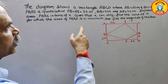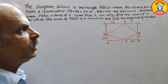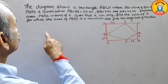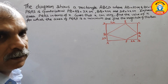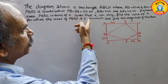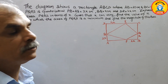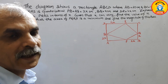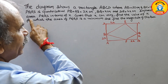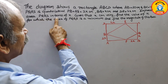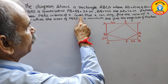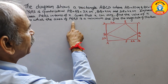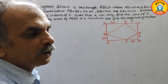The question is: the diagram shows a rectangle ABCD where AB is equal to 20 cm, BC is equal to 16 cm. PQRS is a quadrilateral where PB equals AS equals 2x cm, BQ equals x cm, and DR equals 4x cm. Express the area of PQRS in terms of x. Given that x can vary, find the value of x for which the area of PQRS is a minimum, and find the magnitude of this area.